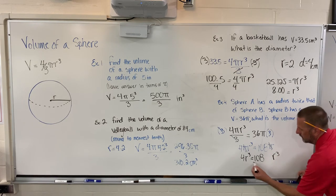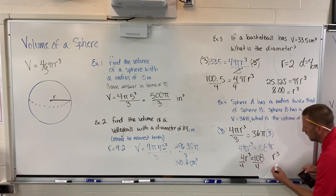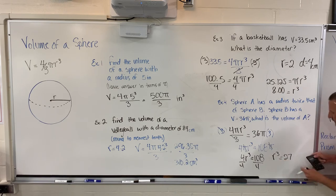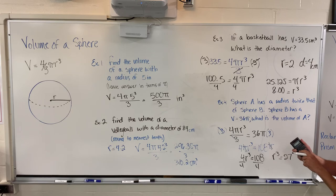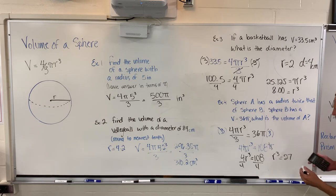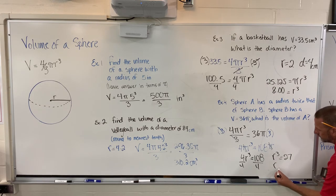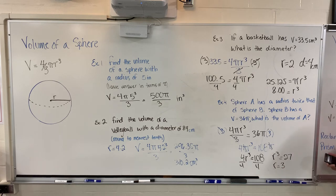If I divide 108 by 4, I got 108 divided by 4 brings me to 27. r cubed is equal to 27. Hit the button here - shift and right above my plus minus sign I've got cube root. My radius is 3.